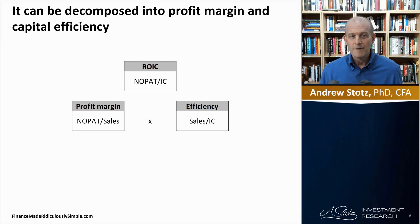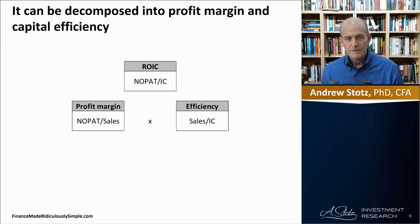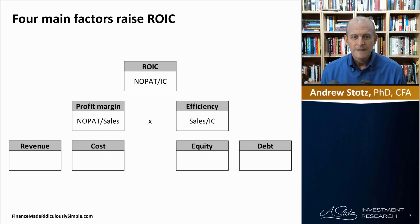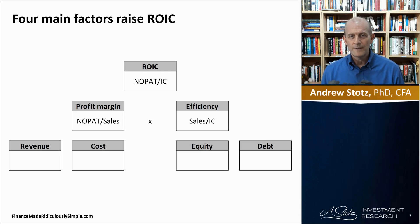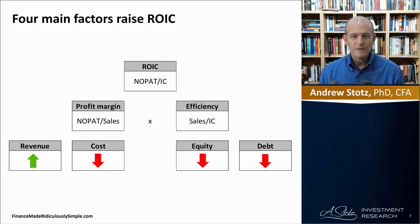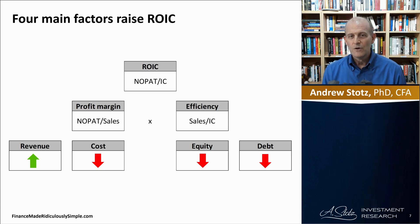ROIC is derived from the profit margin and from efficiency: NOPAT divided by sales, and sales divided by invested capital. We can go further to see the drivers of ROIC — revenue, costs, equity, and debt. If we can increase revenue, decrease costs, decrease equity, and decrease debt, we are causing the ROIC to rise.